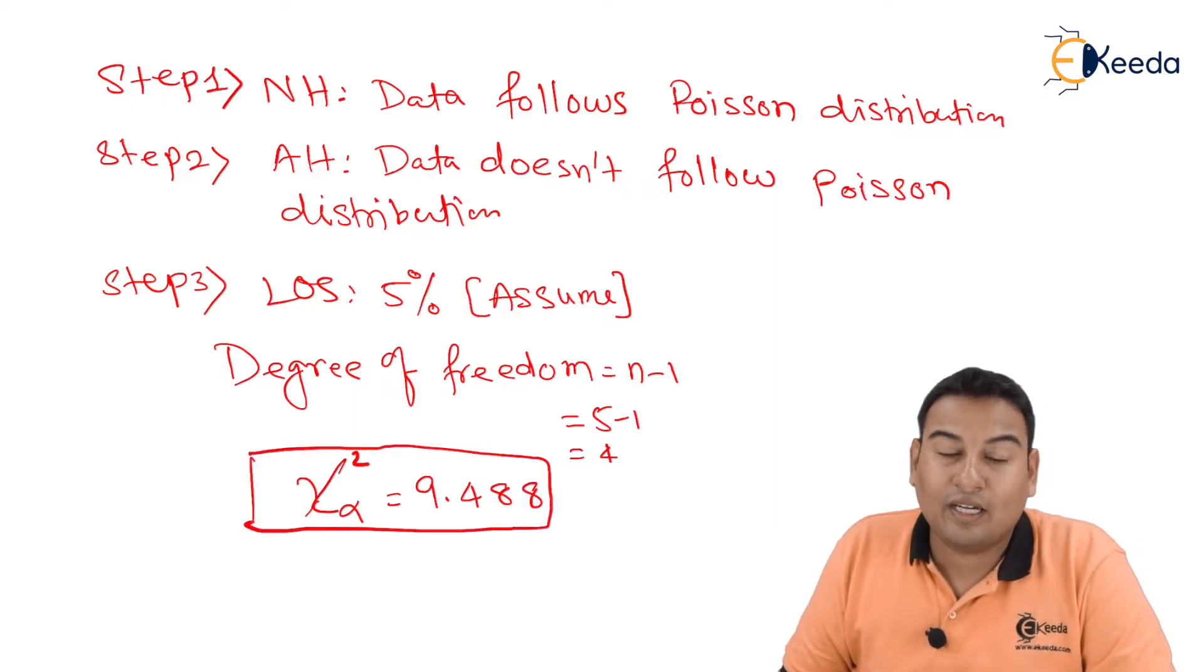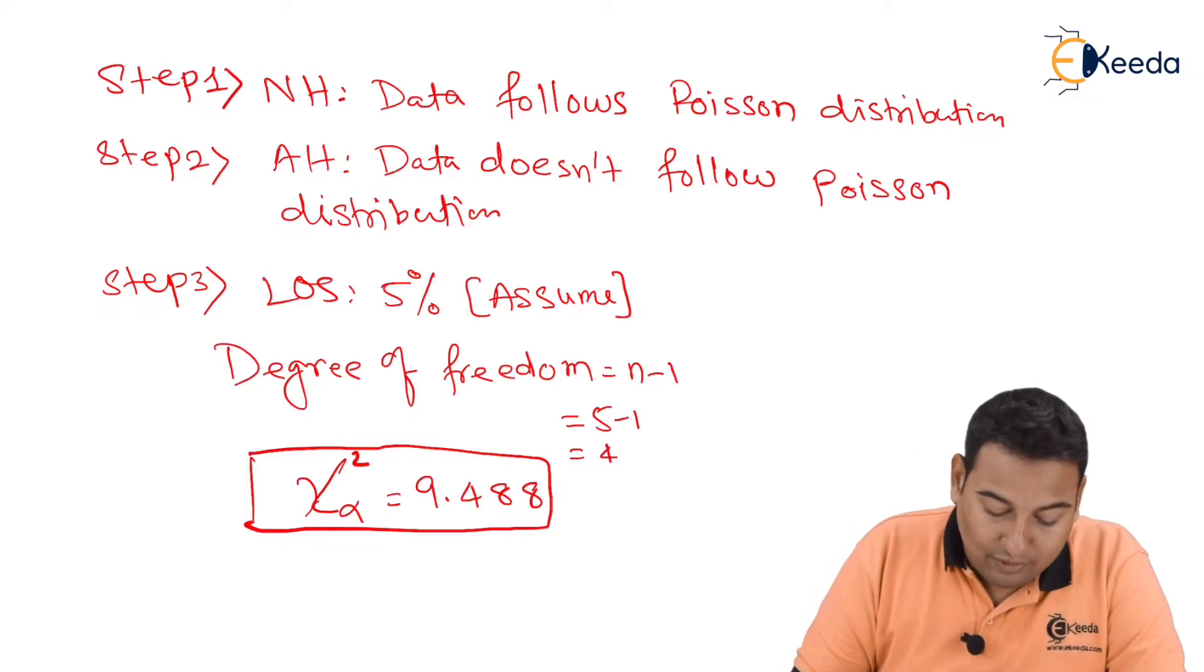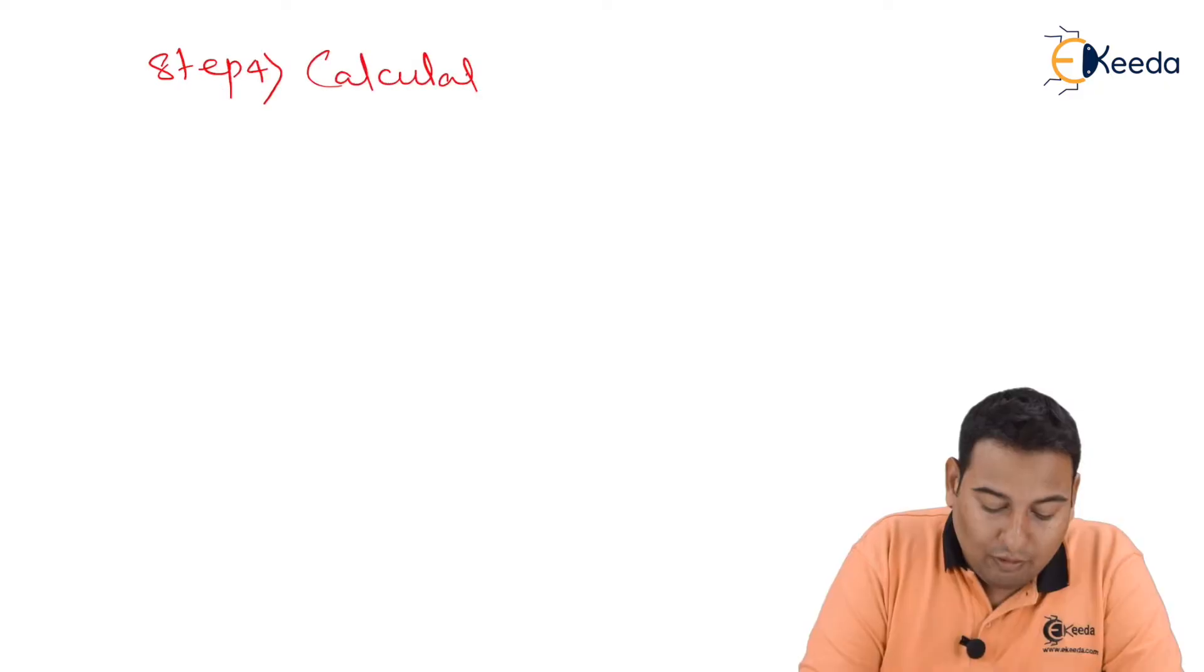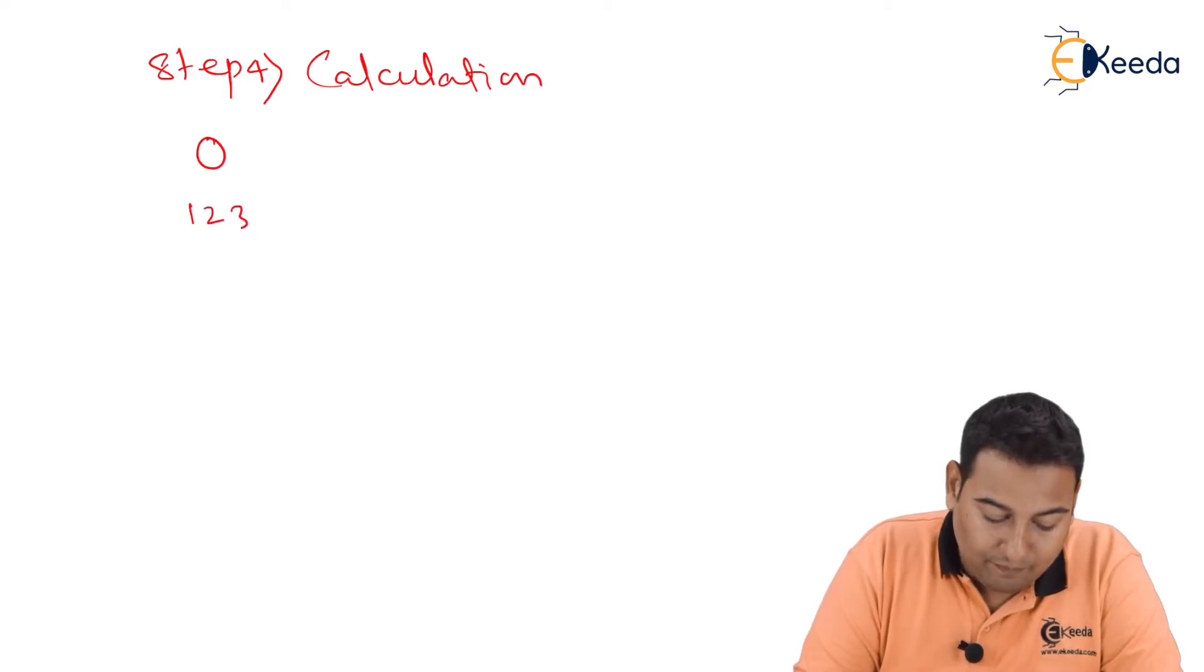This is the value of chi-square that we got from the table. Let's move on to the calculation part, that is step number four. Now friends, observed frequencies, that means given, this is mentioned in the problem.